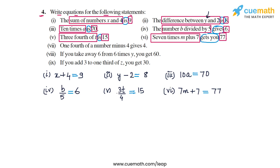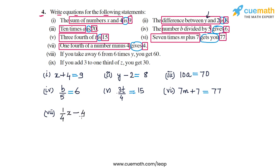In part 7, the statement is: 1/4 of a number minus 4 gives 4. 'Gives' becomes equal to, so the LHS becomes 1/4 of a number minus 4 and the RHS becomes 4. We are not given the variable, so let's assume that number is x. So 1/4 of x minus 4 is your LHS, and the RHS is 4. These two are equal, so this is our equation for part 7.